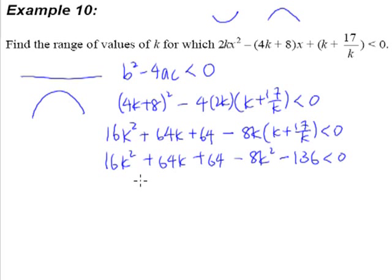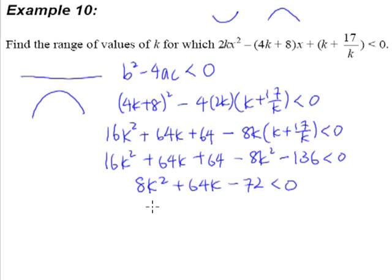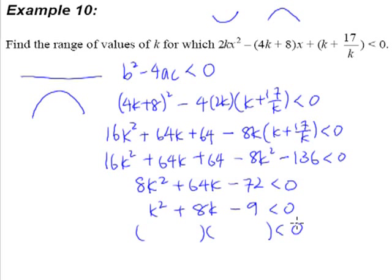After simplification: 16k² minus 8k² gives us 8k², we have positive 64k, but negative 72 for our constant. We know that all the numbers here are multiples of 8, so we can divide throughout by 8 and we get k² + 8k − 9 < 0. Based on what we have learned earlier, what we do next is of course to factorize. We get (k + 9)(k − 1). Let's check: 9k minus 1k gives 8k, and 9 multiplied by negative 1 gives negative 9. Great.